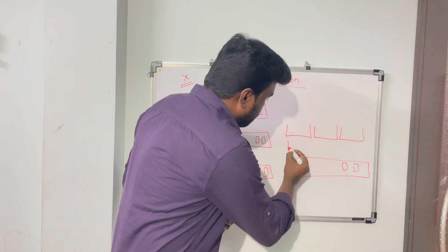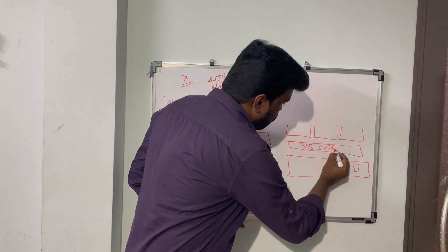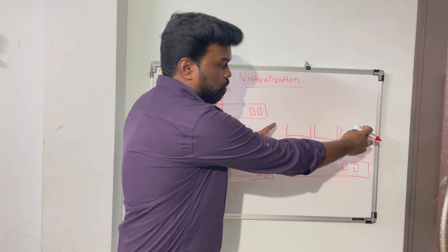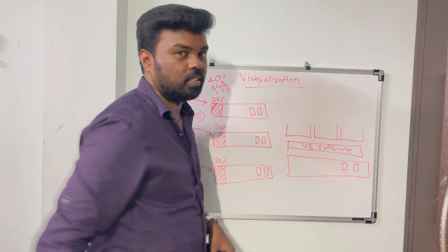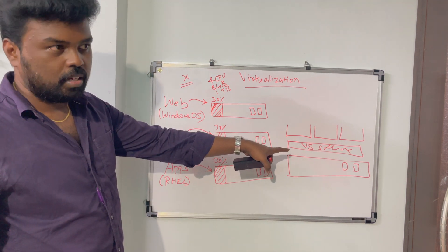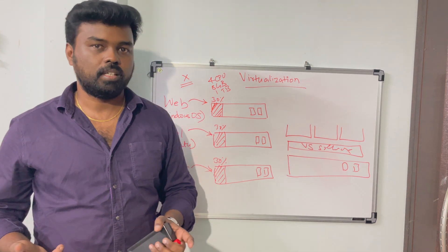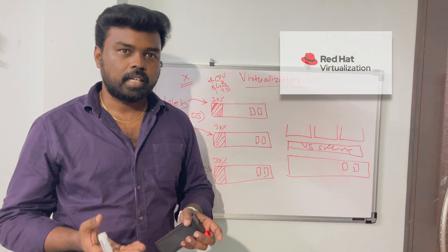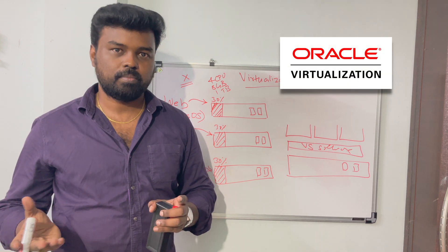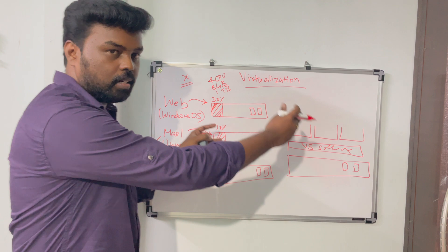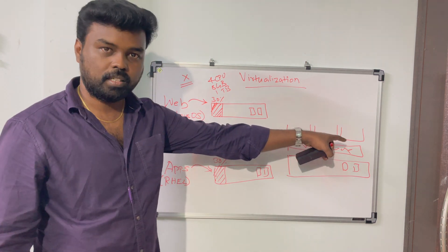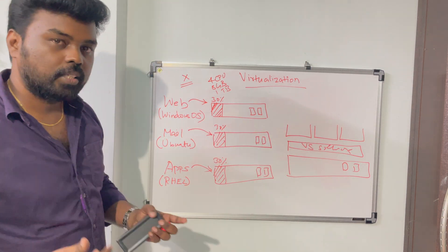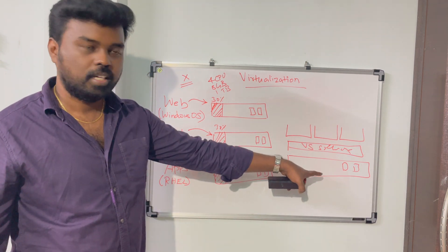That's the whole idea of virtualization. You install a virtualization software on top of the physical hardware's operating system, and this virtualization software provisions multiple isolated environments on top of it. There are several virtualization tools available — open source and commercial. One of the most popular virtualization platforms is VMware. Red Hat and Oracle also have their own virtualization platforms. In real-world situations, you can actually create 100 to 200 VMs on a single physical hardware, based on its capacity.